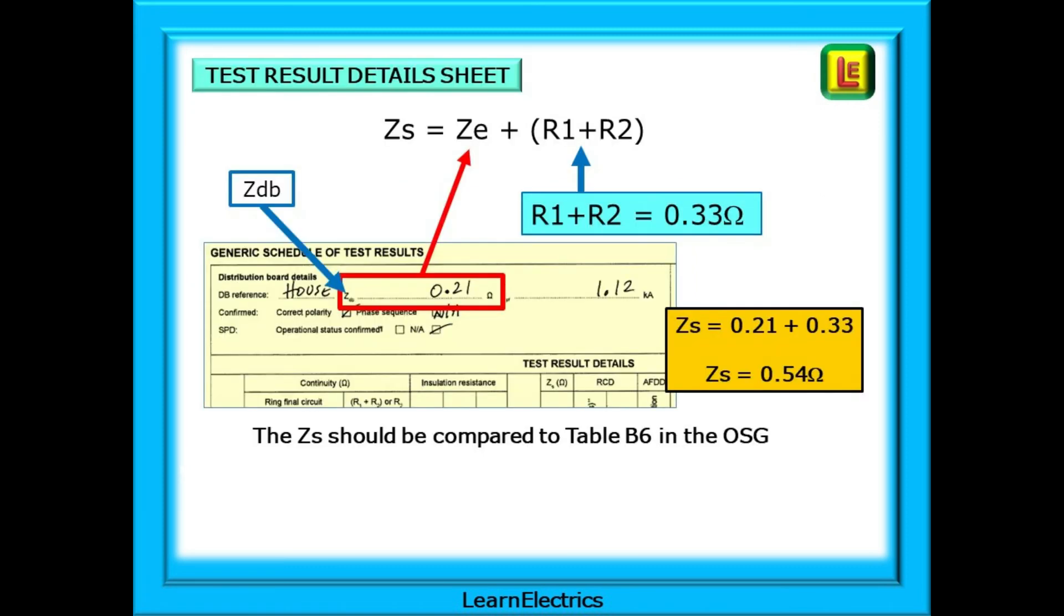If we look at the top of the test results details sheet, we have a line for ZDB. This is the ZE for this consumer unit, 0.21 ohms. There's a reason for it being called ZDB, which is explained in another video. We know that ZS equals ZE plus R1 plus R2, and this formula should be permanently stamped in your memory.